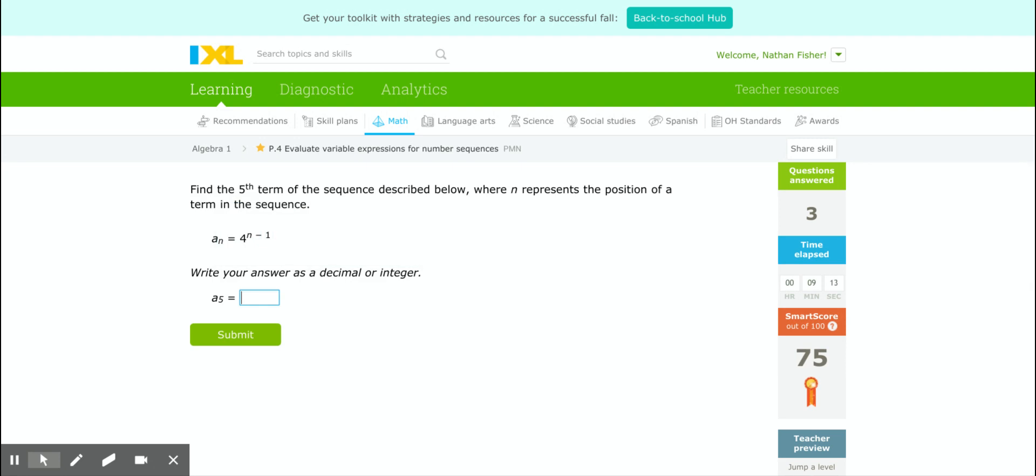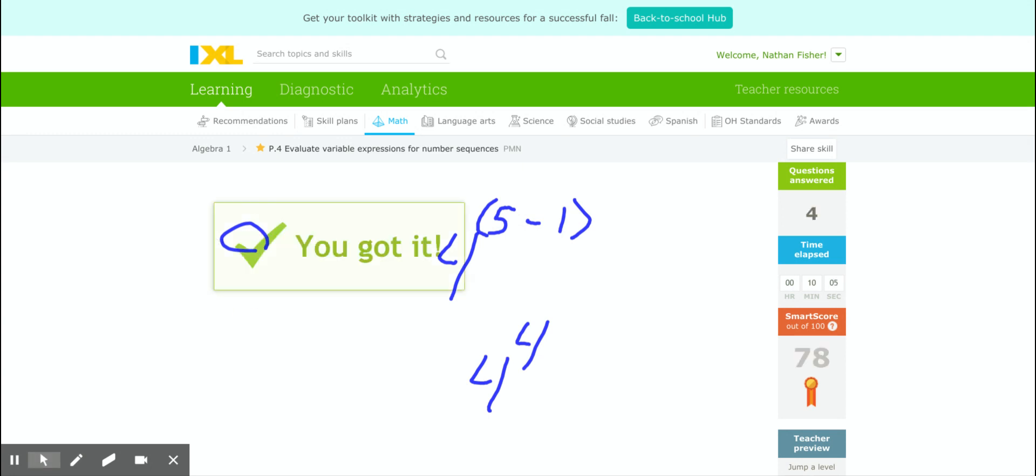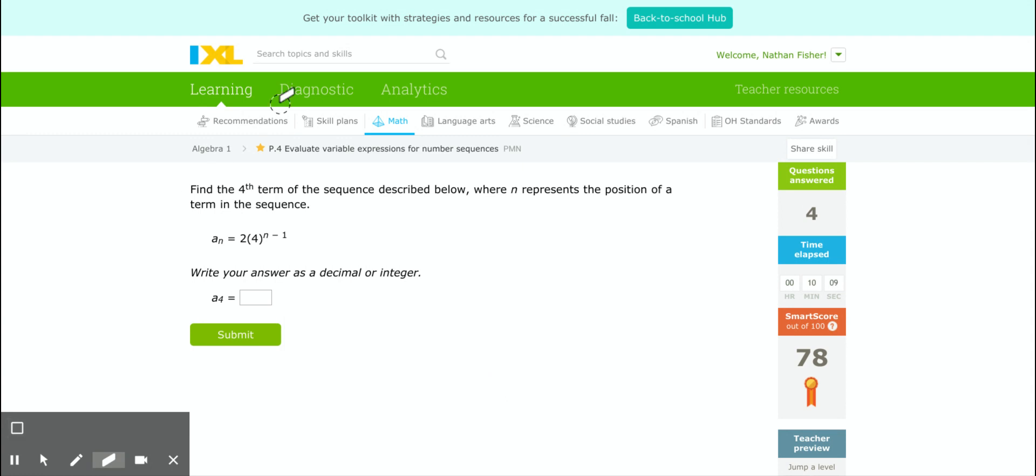All right. This one's a little bit different. We'll take a look. Find the fifth term of the sequence below, where n represents the position of a term in the sequence. So let's kind of think about that. If I'm finding the fifth term, I don't need to plug in 1 or 2 or anything like that. I'm just going to go straight to plugging in 5 minus 1 as part of my initial equation given now. 5 minus 1, that's basically treated like, just so you guys know, that's treated like parentheses, even though we don't see it when it's all in that exponent. So that happens first to give us 4 to the power of 4. 4 to the power of 4 is 256. So let's see what we end up with there. Awesome.